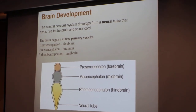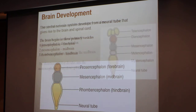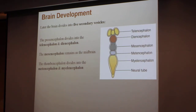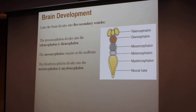So the prosencephalon divides into telencephalon and diencephalon. The middle one, the mesencephalon, remains the same. The rhombencephalon divides into metencephalon and myelencephalon.